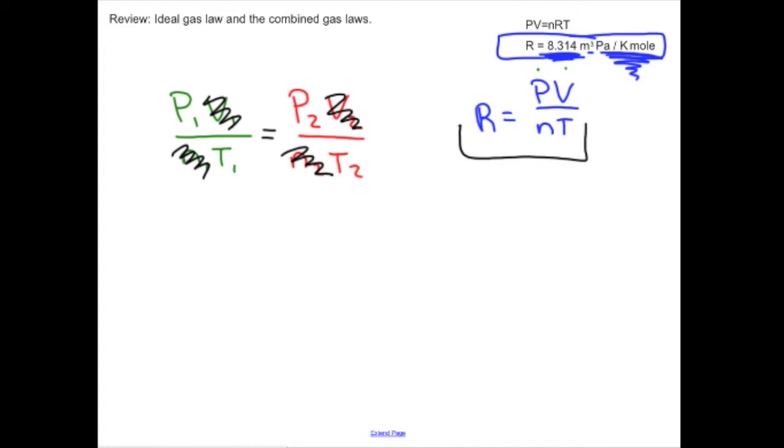If you get rid of just the number of moles, that's a really common real-life example that you would have where you just don't have any flow of gas, nothing coming in, nothing leaving. The number of moles is constant, so they cancel on both sides. Then you'll see what people refer to as the combined gas laws.